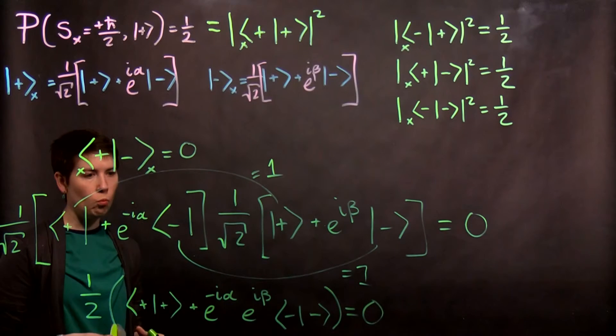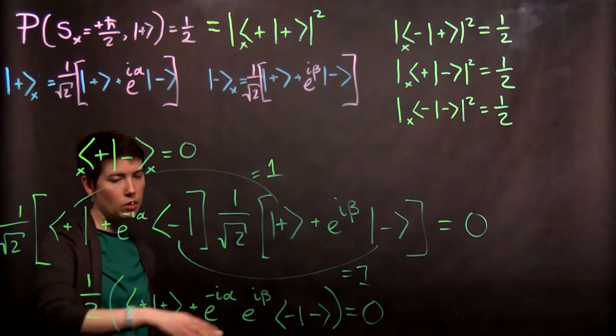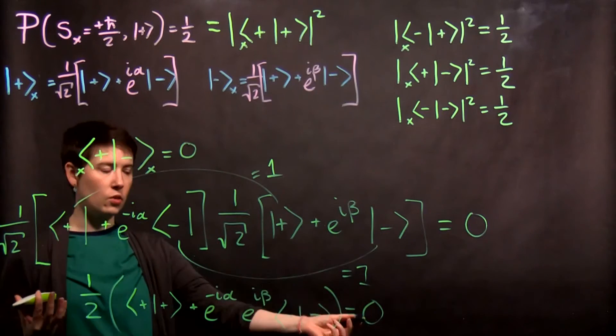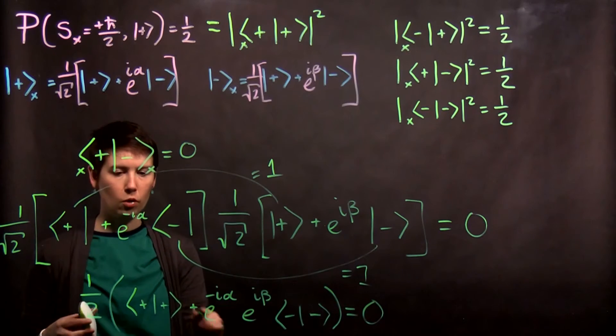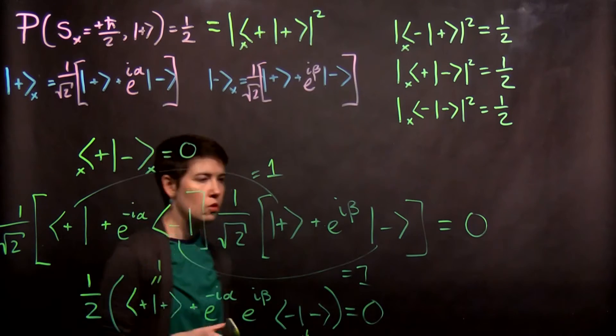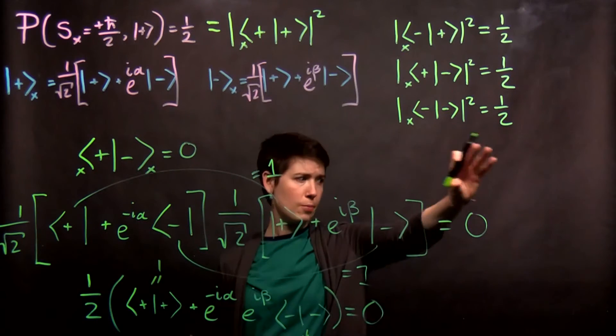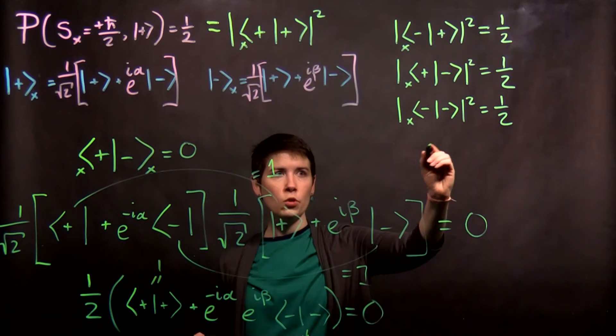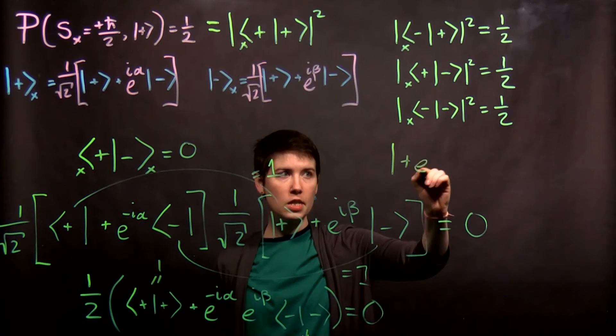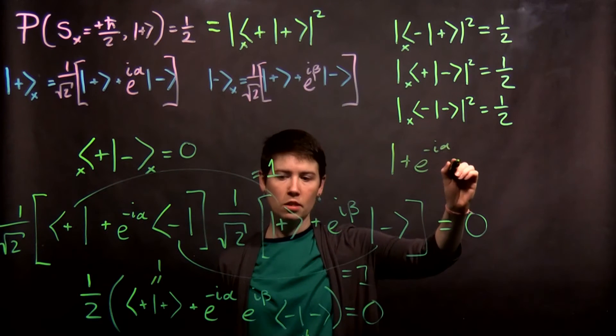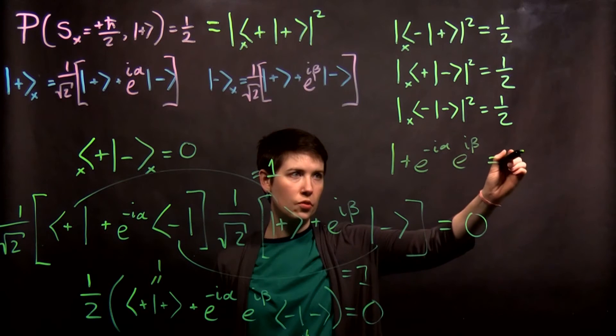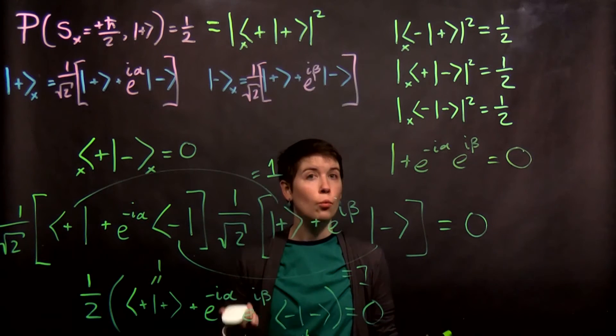So now, what can I do? Here, notice that this 1 half, I can actually multiply both sides by it. Since this is 0, it's going to go away. This equals 1, and this equals 1. So I have to come up here to have a little bit of space. We're now going to have 1 plus e to the negative i alpha, e to the i beta equals 0.